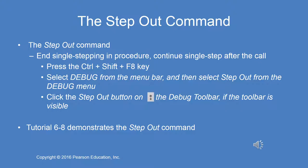Let's say you've stepped into a procedure or a function and you decide after stepping into one or more lines of code that everything is okay and you want to step out. You don't want to continue to single-step through it. You would then click the step out button to step out of that procedure — in other words, end the procedure, execute all the code to the end, and go back to where it was called. Tutorial 6-8, which is posted in the timeline session, demonstrates the use of the step out debugging command.